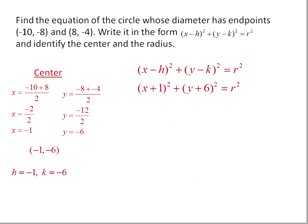Notice that we're still missing the last constant, r. We can find that by substituting in one of our points for x and y. We could use either point. I'm going to use the point negative 10, negative 8.